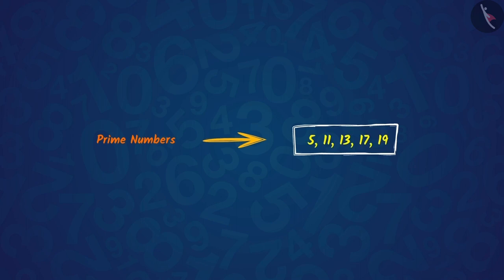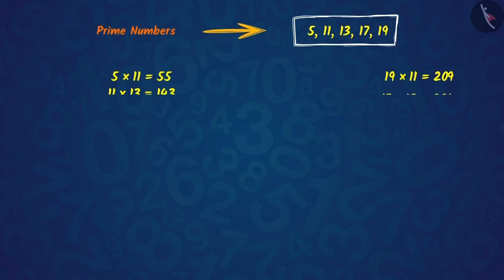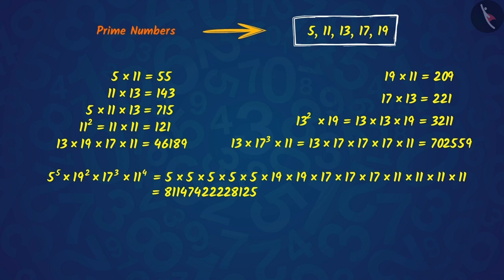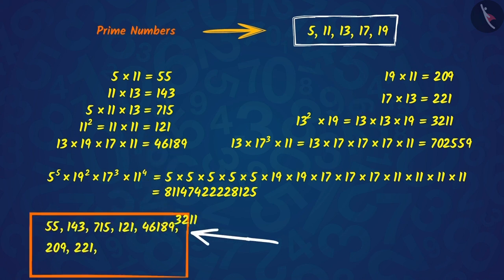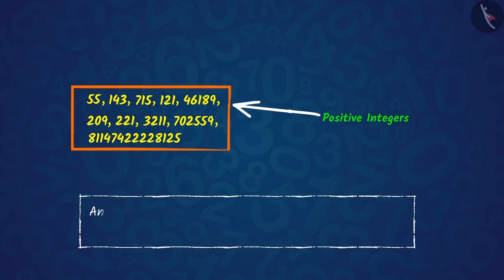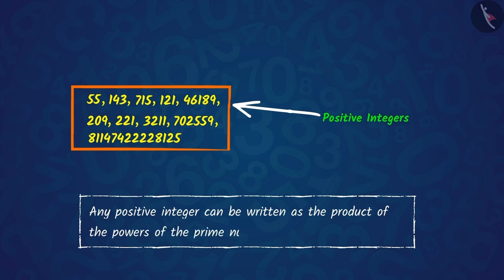If we take a group of prime numbers and multiply some or all these numbers any number of times, we will get a positive integer in each case. Therefore, we can say that any positive integer can be written as the product of powers of prime numbers.